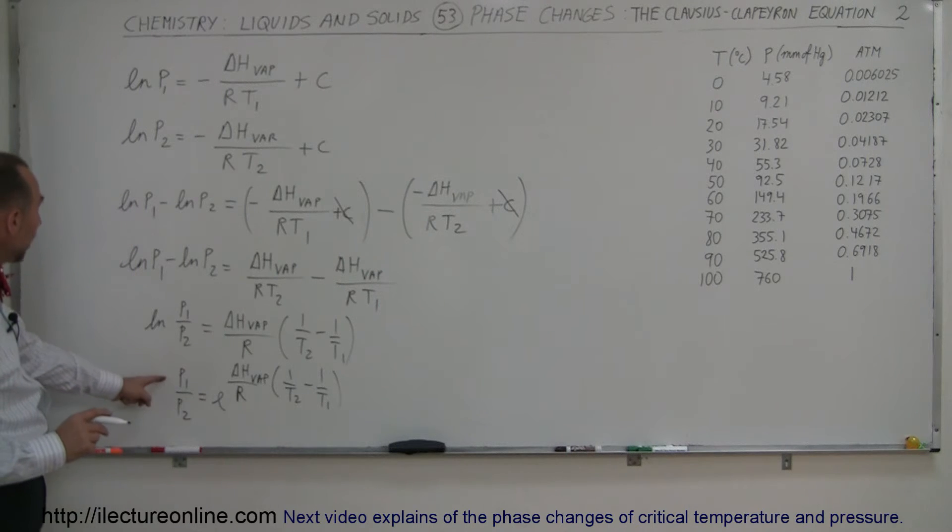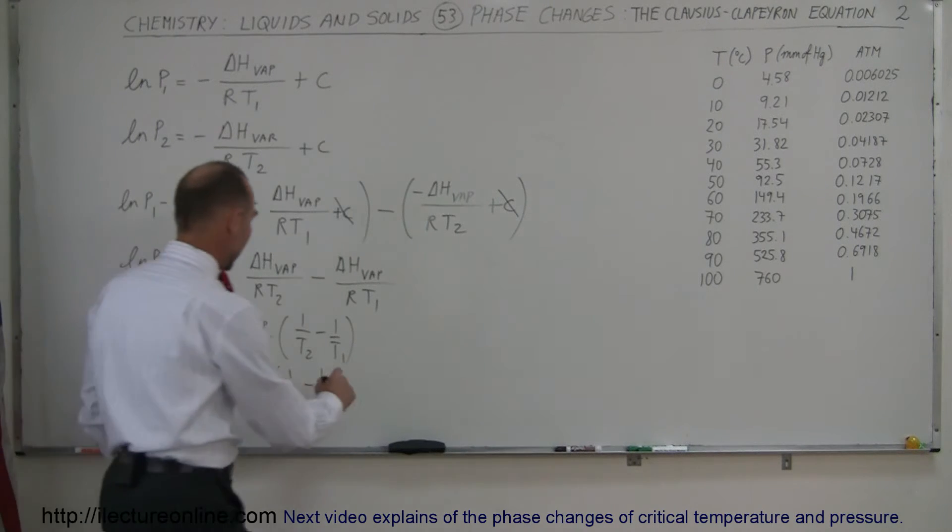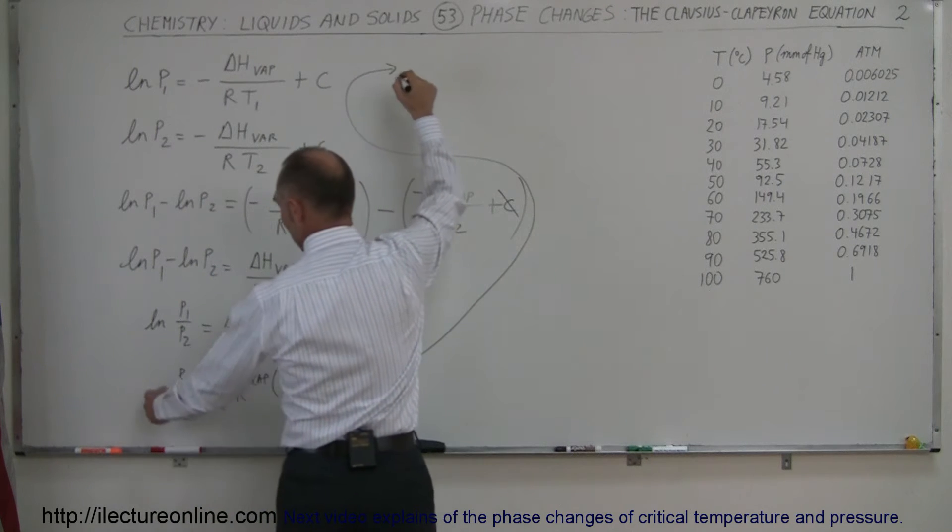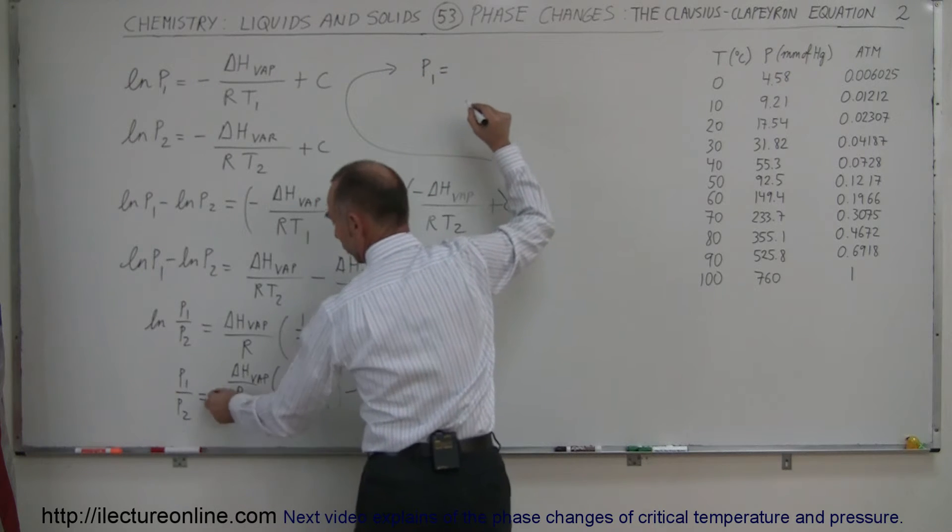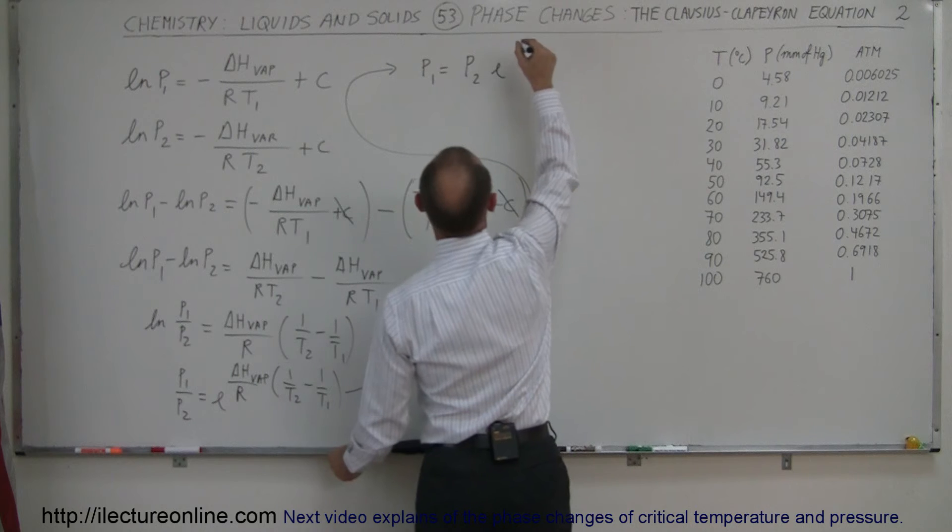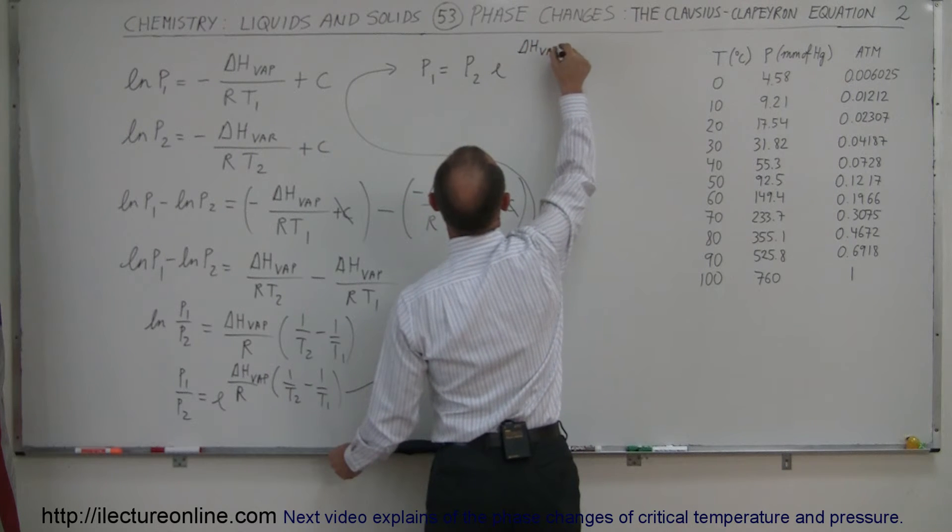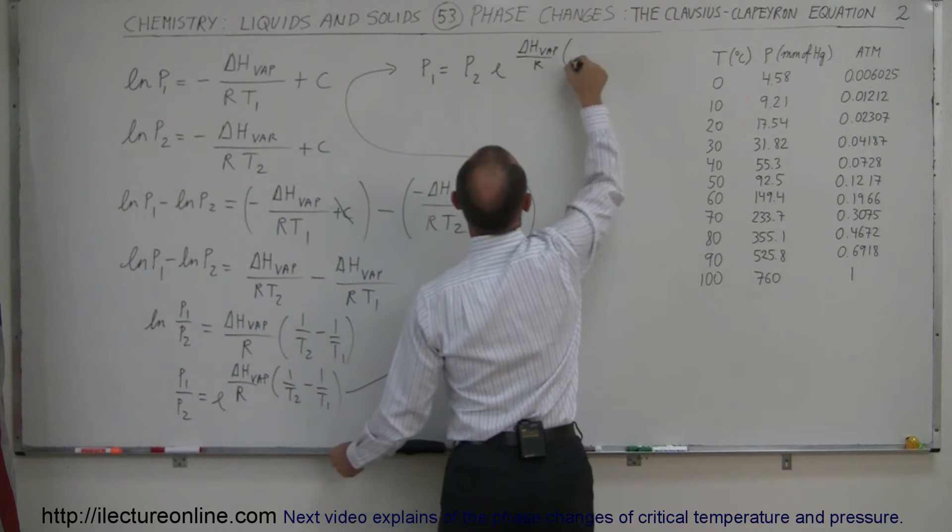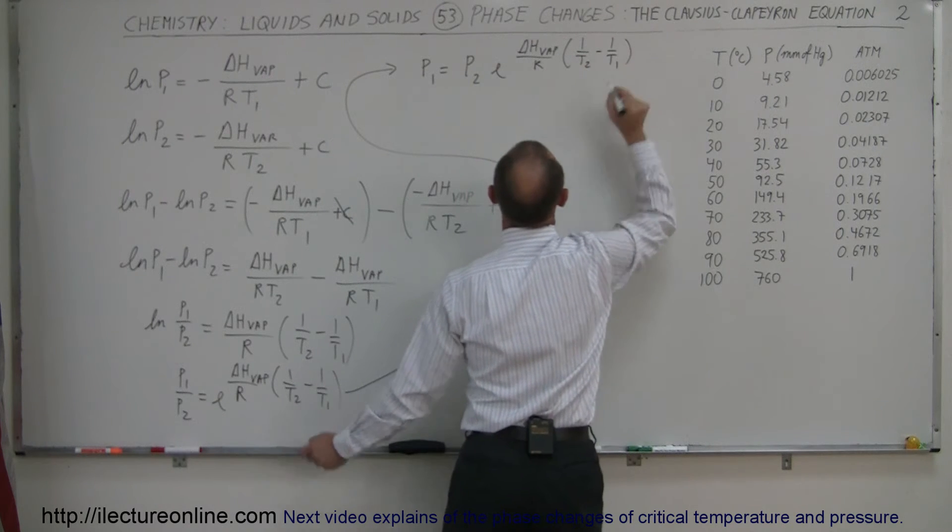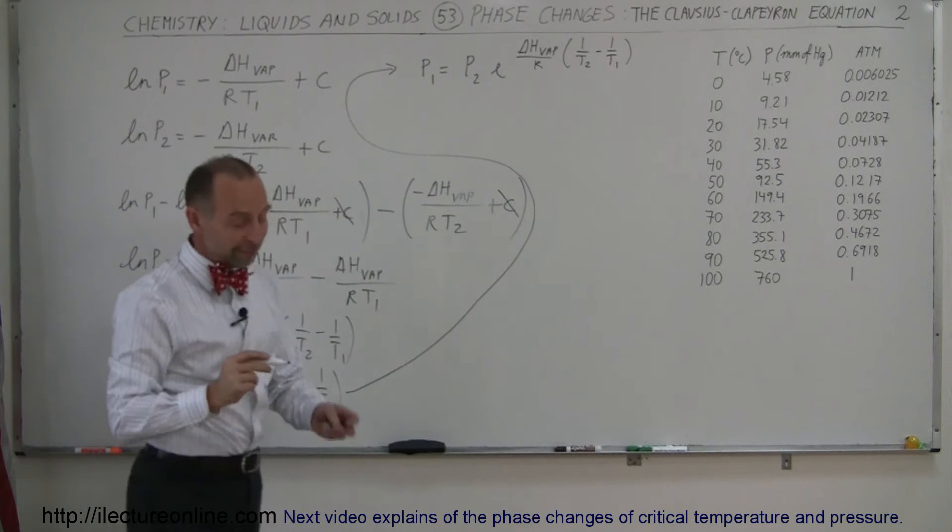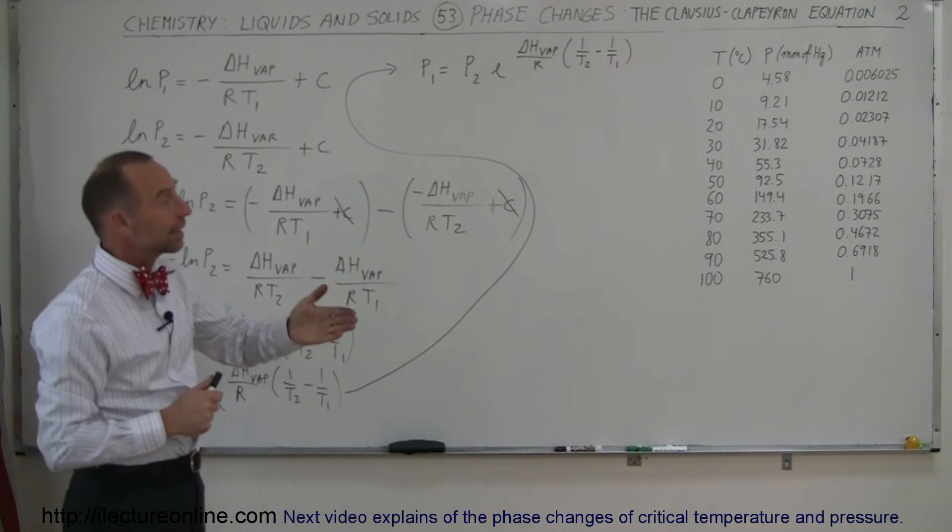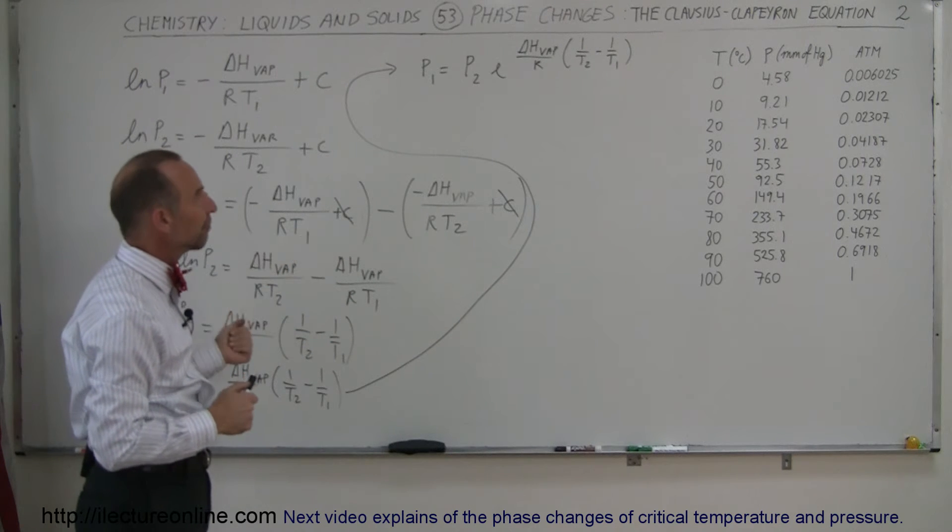If I want to know what P1 is and P2 is known, I can write P1 equals P2 times E to the enthalpy of vaporization divided by R times 1 over T2 minus 1 over T1. Which means, if I know the pressure at a particular temperature, I can then calculate the pressure at a different temperature.